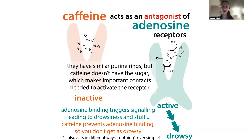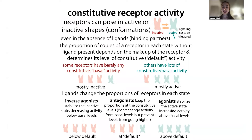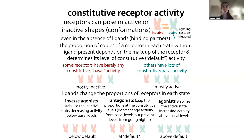But now say that your receptor is actually active in the absence of a ligand. This has become increasingly recognized as a real phenomenon. It can be especially an issue when overexpressing the receptor in a lab, but it also happens in normal cells. There are mutations that can cause disease like cancer by making receptors more active than normal. This is called constitutive activity.